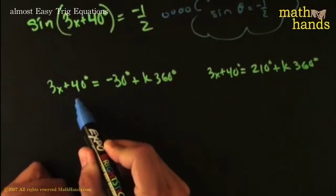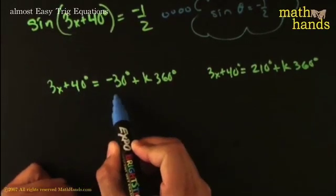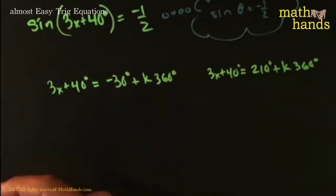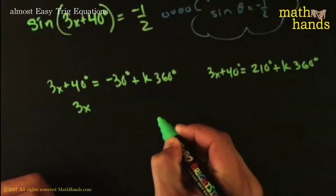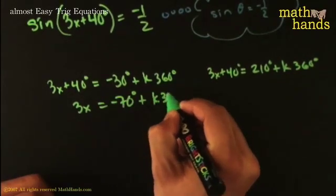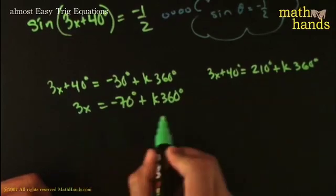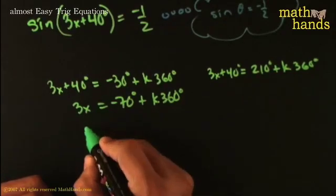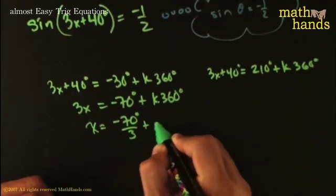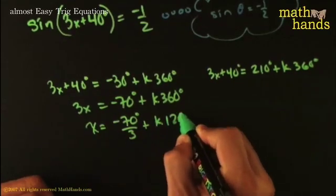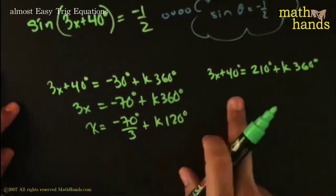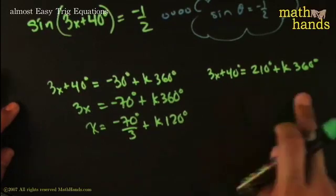And here the ultimate goal is to solve for X. So I could subtract 40 from both sides, and that would give me 3X is equal to negative 70 degrees plus multiples of 360 degrees. Then I could divide everything by 3 to solve for X. And that would give me that X is equal to negative 70 degrees divided by 3 plus multiples of 120 degrees, which is 360 divided by 3. And that would be one family of solutions.